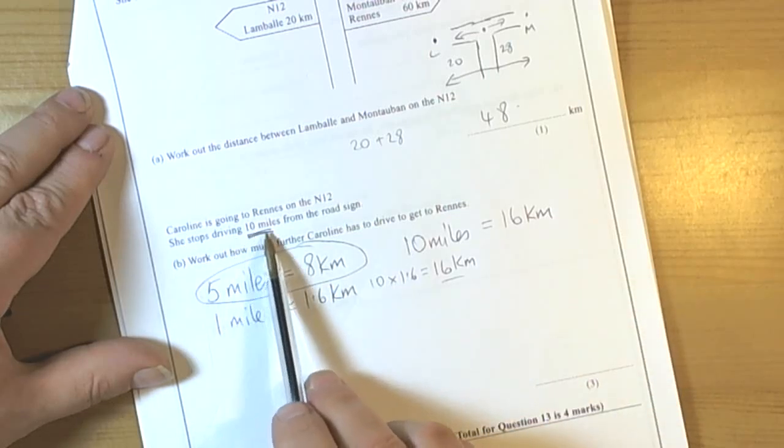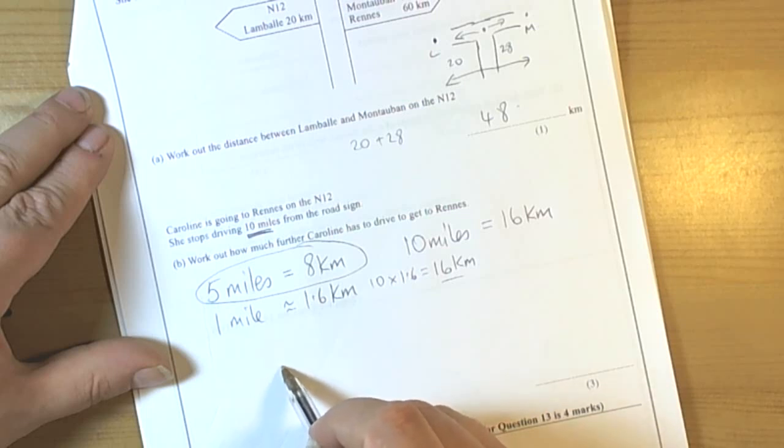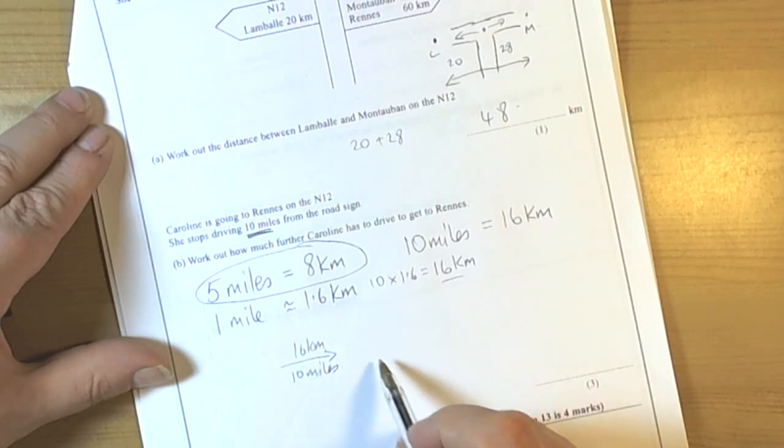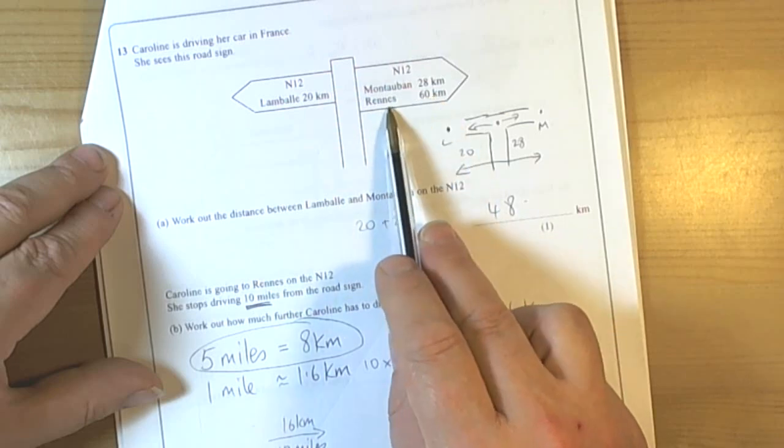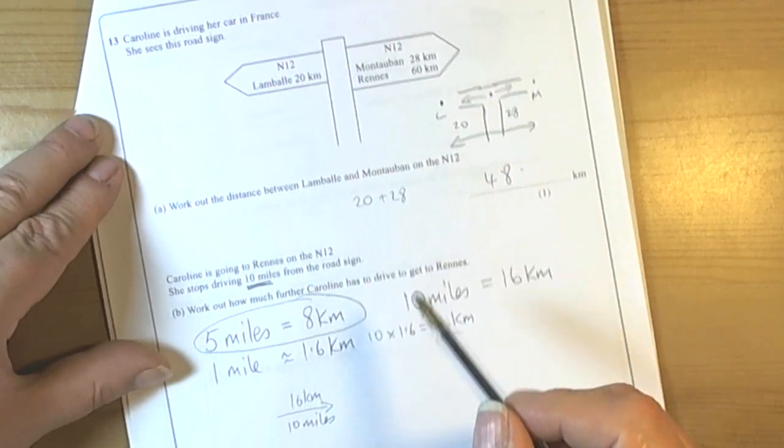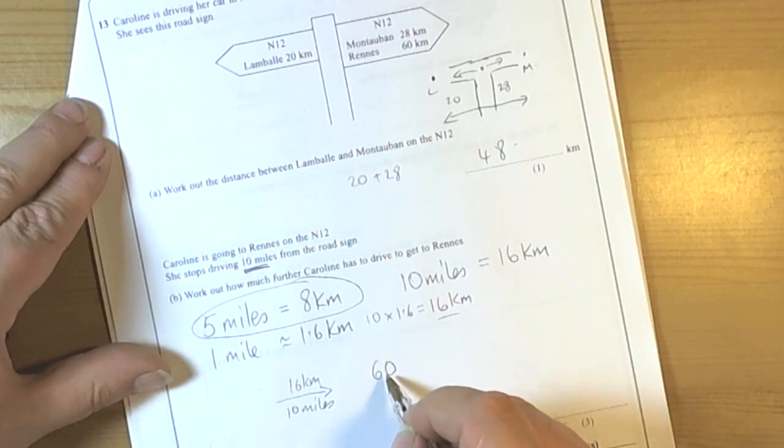So she stopped driving 10 miles from the road sign. In other words, she's gone 10 miles that way, the same 16 kilometres. Now the signpost said for going to Ruan it was going to be 60 kilometres. So she's gone 16 kilometres so far, so we're going to have to do 60 take away 16.